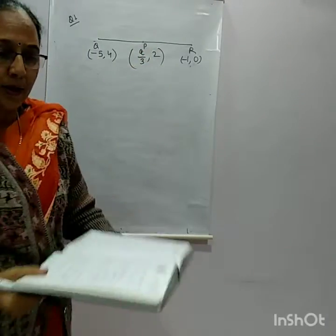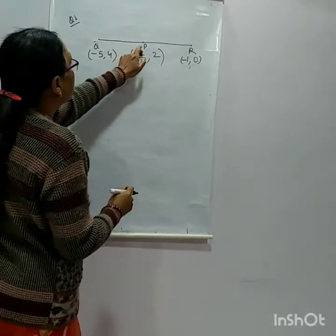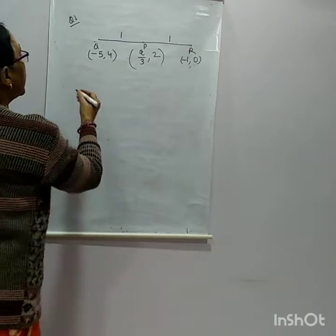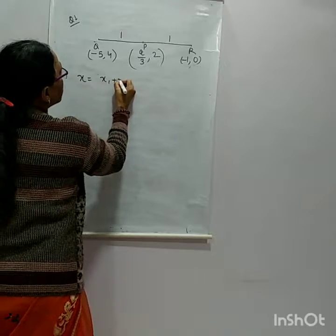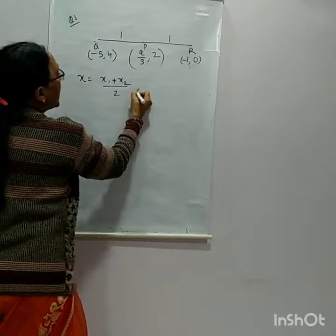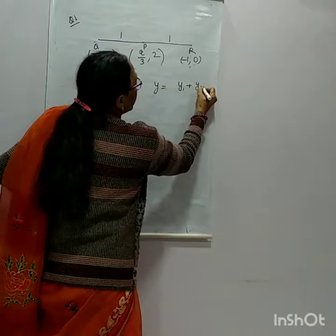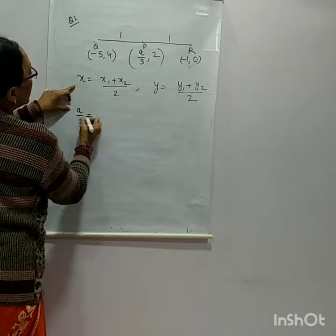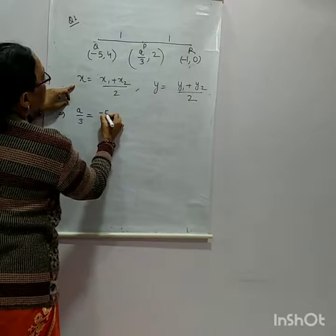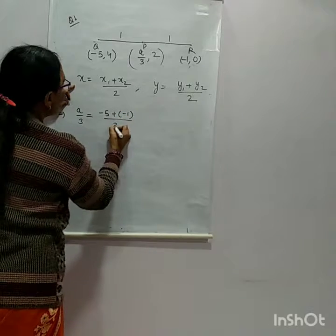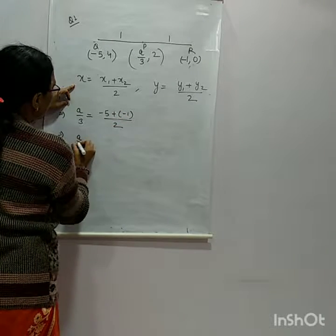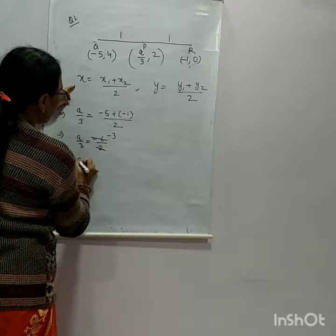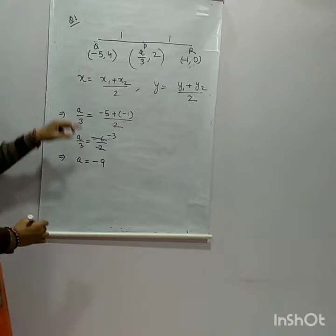Since P is a midpoint, the ratio will be 1:1. We know the midpoint formula: X = (X1 + X2)/2 and Y = (Y1 + Y2)/2. Writing the X value: A/3 = (-5 + (-1))/2, which gives A/3 = -6/2 = -3. Therefore A = -9.